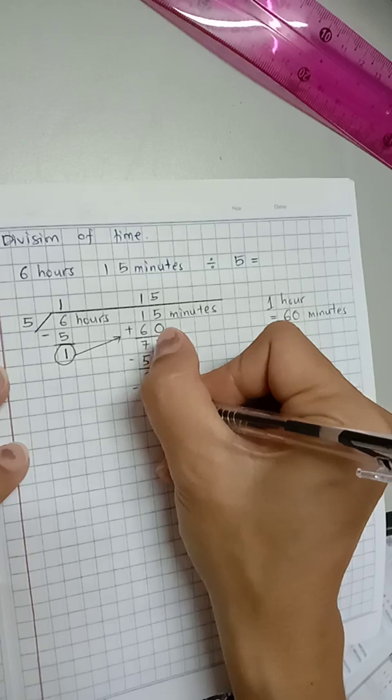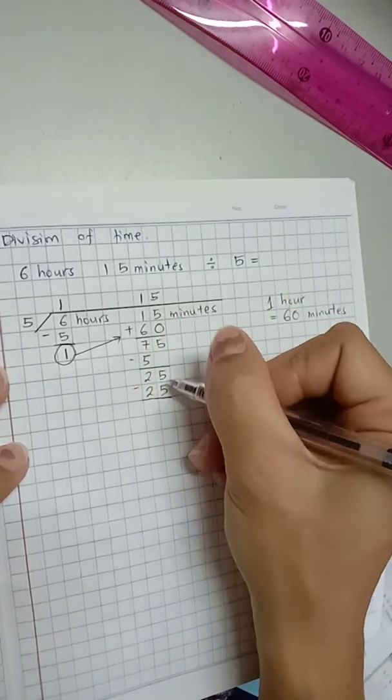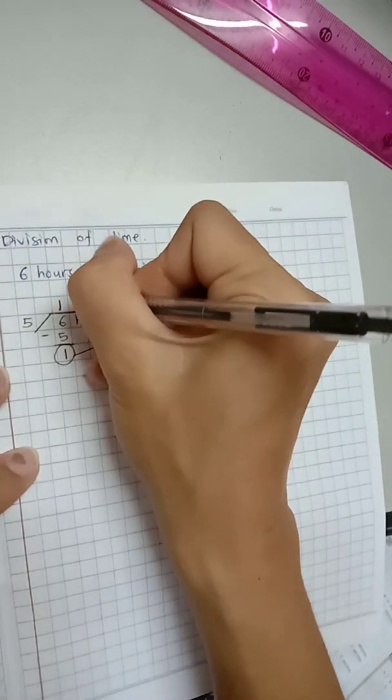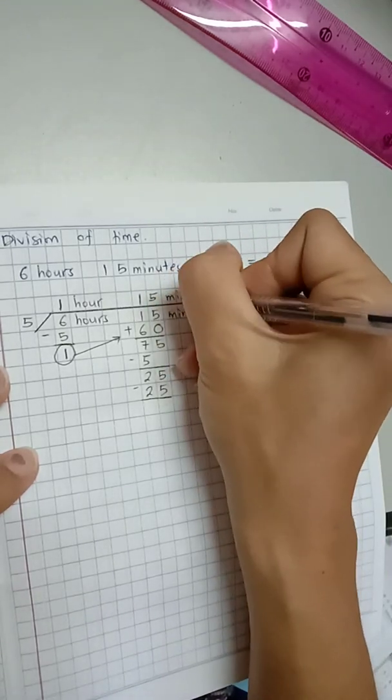Let's find the remainder, no more, it's 0. So the answer is 1 hour and 15 minutes.